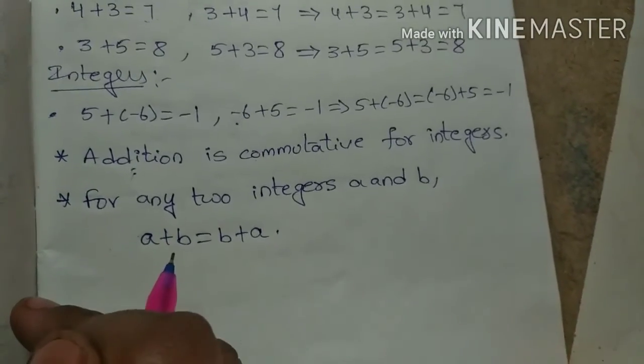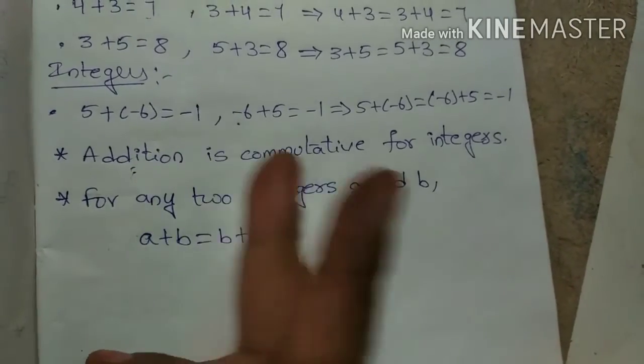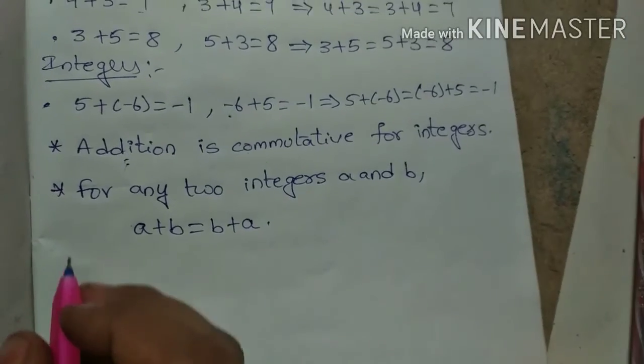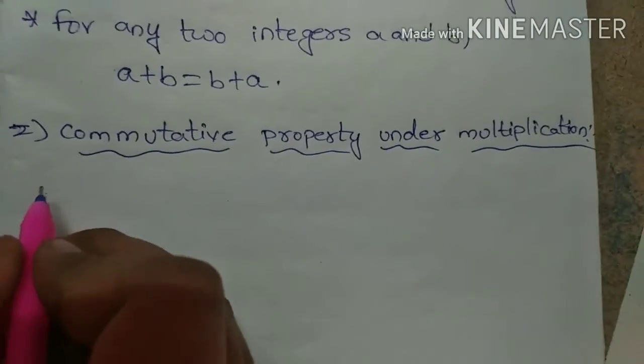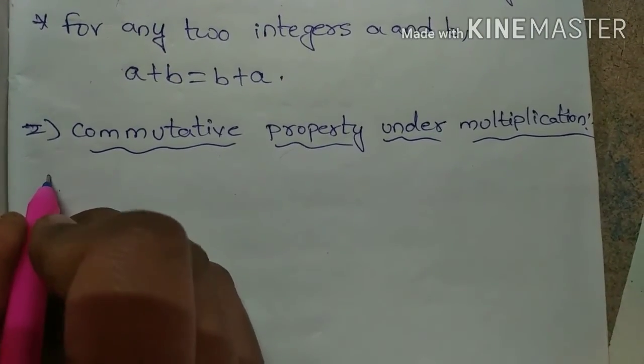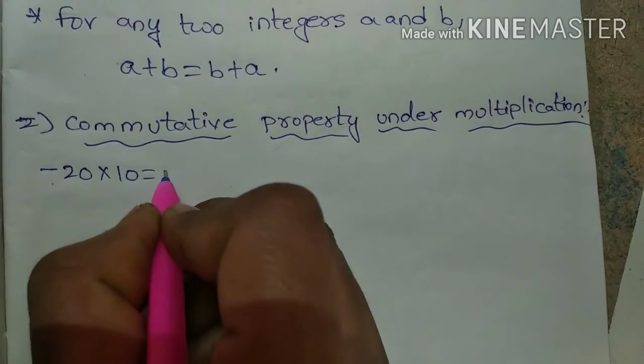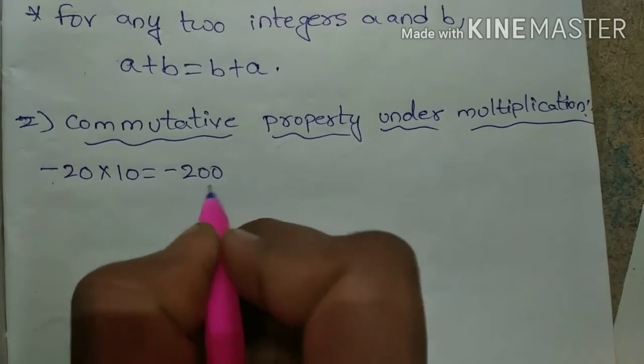Next, commutative property under multiplication. Here too, I am taking addition and multiplication both at the same time. Here, -20 × 10 equals how much? Minus 200. So 20 times is 200, and minus into plus is minus.